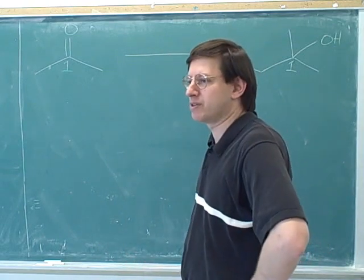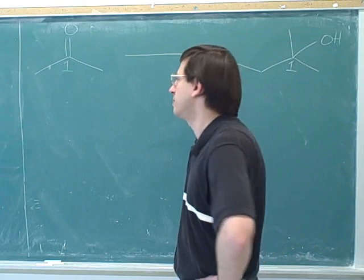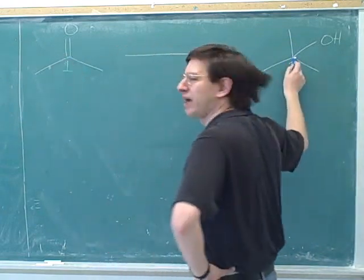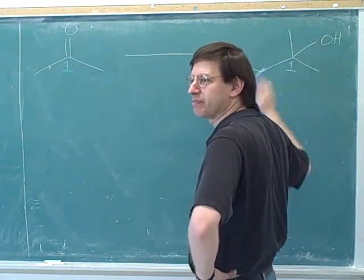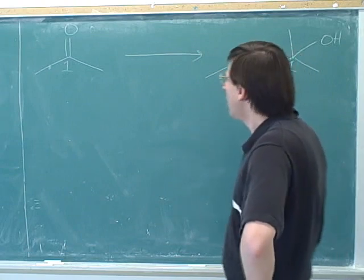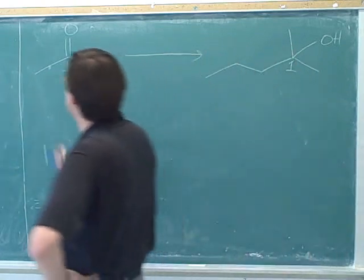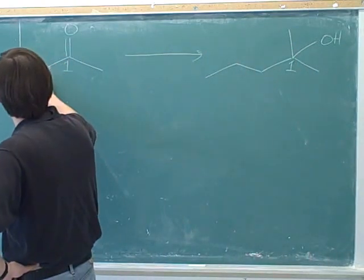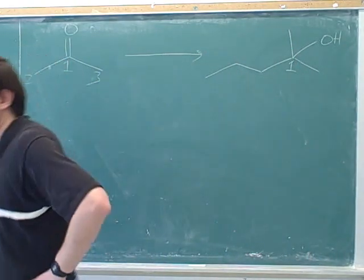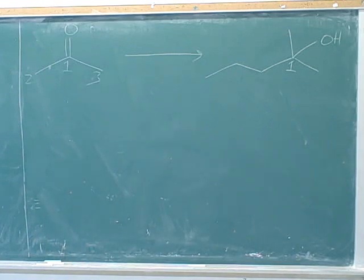Obviously, if two carbons are the same, you give them the same number. We could call this carbon Bob, and then call this carbon Bob too — or leave it the boring name of number one. Now I'll put in some numbers here — I'll call these, say, two and three. Can you figure out which carbons are two and three in the other picture?